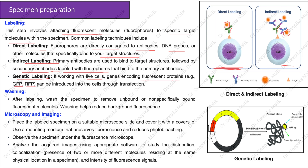Genetic labeling: if working with live cells, genes encoding fluorescent proteins such as green fluorescent protein (GFP) or red fluorescent protein (RFP) can be introduced into the cells through transfection. As shown in the diagram, there is a promoter where transcription starts and a gene encoding the fluorescent protein is added just before the gene of interest, so that after transcription and translation the resulting protein already contains GFP, enabling easy traceability.